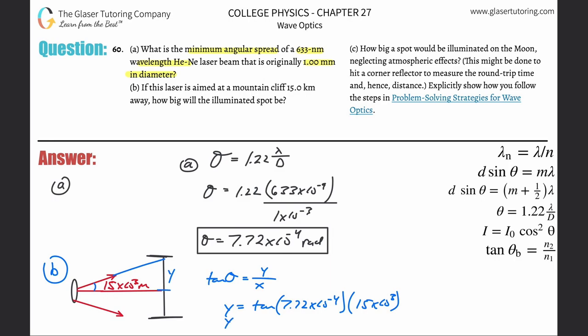Now keep in mind that this is only going to be half. So when you find this out, make sure your calculator is in radian mode. So tangent of that value, the angle that we found in the prior problem, multiplied by 15 times 10 to the third. So I get about 11.58.